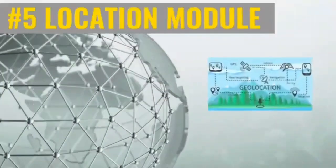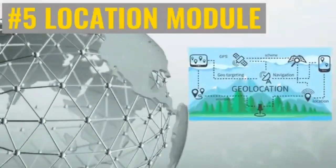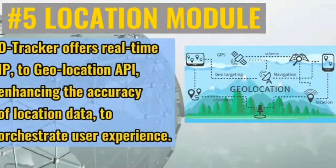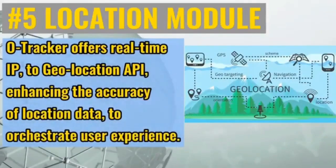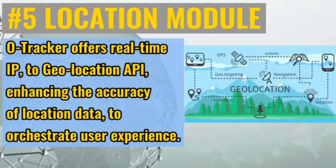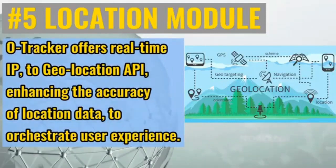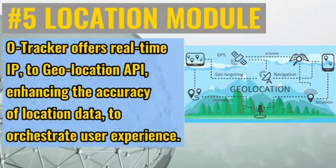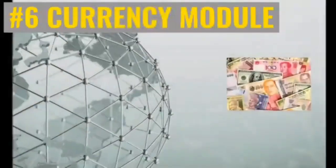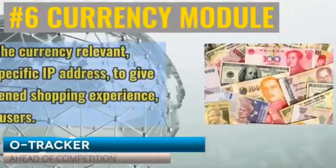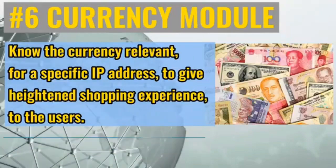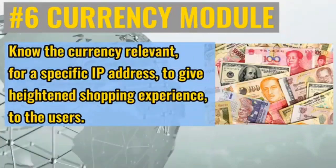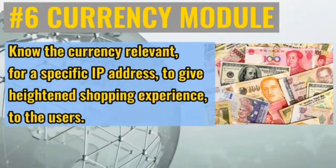Number five: location module — O Tracker offers real-time geo location API, enhancing the accuracy of location data to orchestrate user experience. Number six: currency module — know the currency relevant for a specific IP address to give a heightened shopping experience to the users.